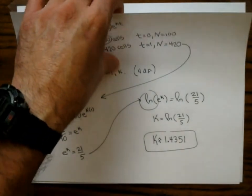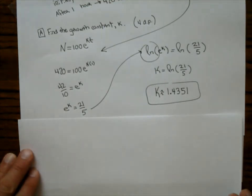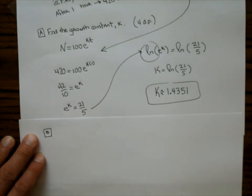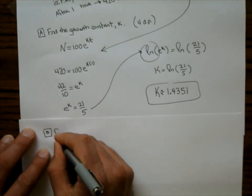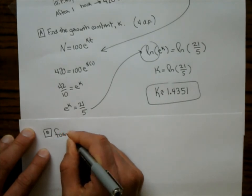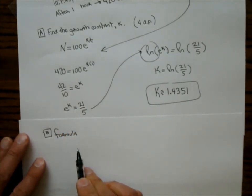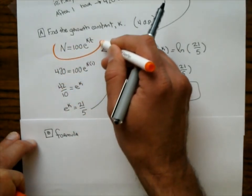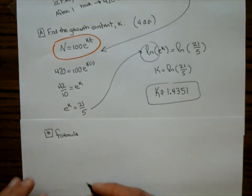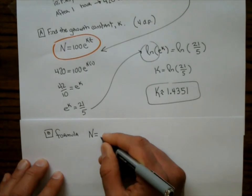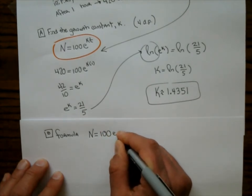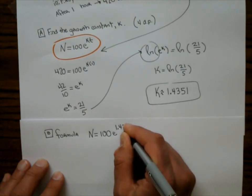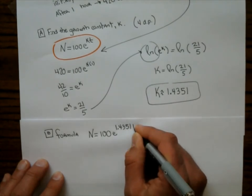Part B asks for the formula for the number of bacteria at time t hours. Since we now know k, the formula is N(t) equals 100e to the 1.4351t.